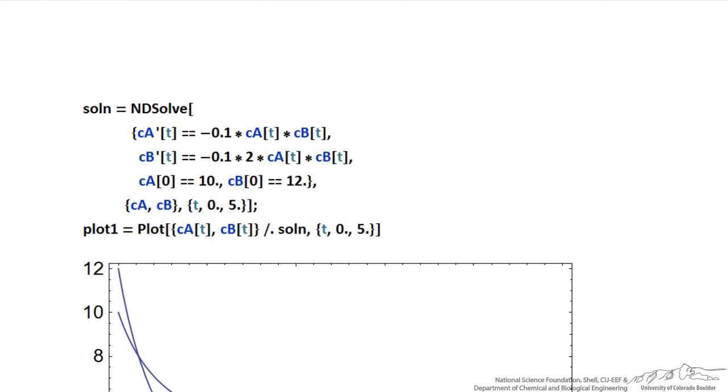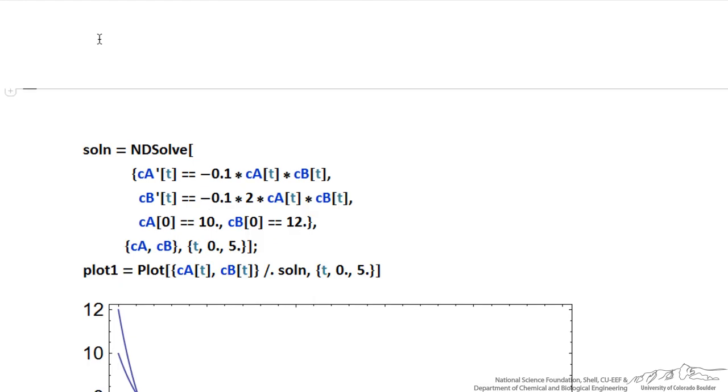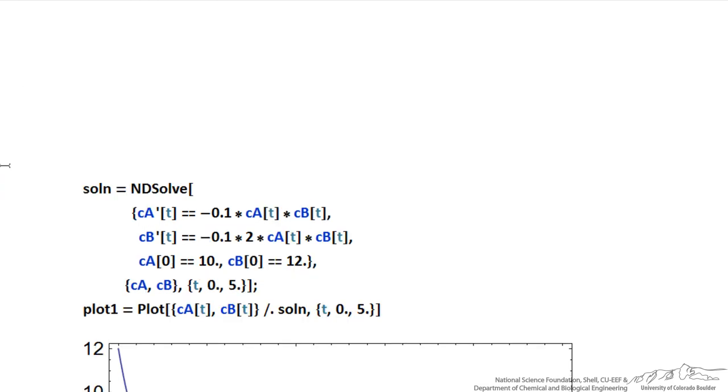And so all we need to do to enter comments, if I hit the down arrow, and you see this horizontal line, when I select this, I can select plain text, and then I can put in text that does not correspond to any commands to Mathematica, it's just to explain what this program solution is about.